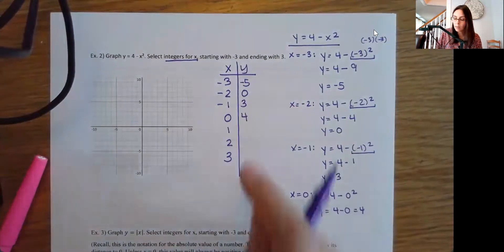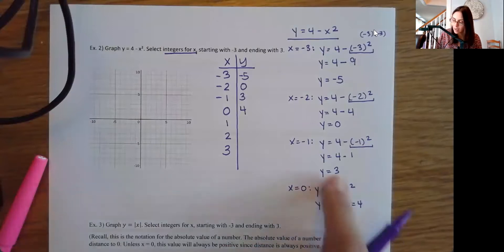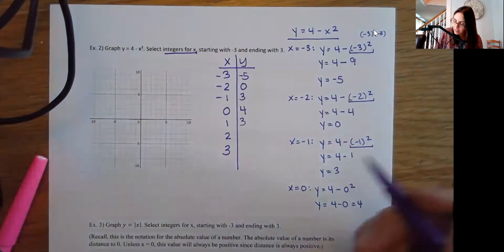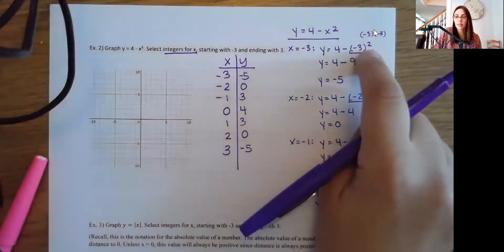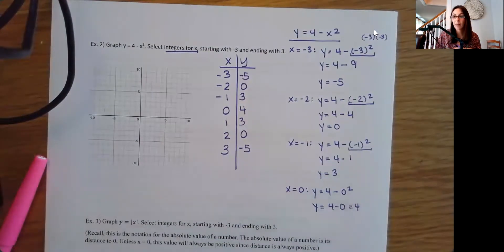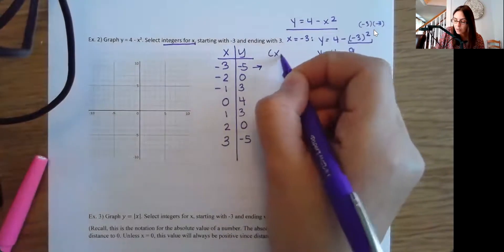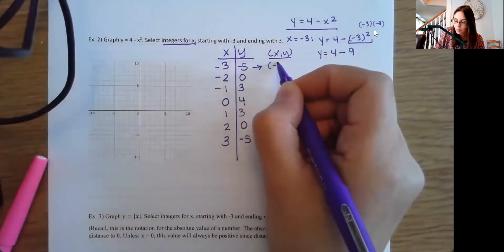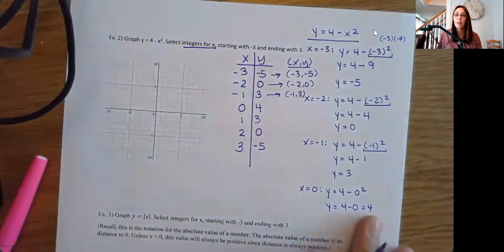Continuing the table: for x = 1, y = 3; for x = 2, y = 0; for x = 3, y = -5. You'll notice a repeating pattern because the x value is getting squared, so the positive and negative values produce the same y result. But that's not always the case, so always do the work carefully. Each row in the table corresponds to a point — I like a table when graphing because it's easier to stay organized.